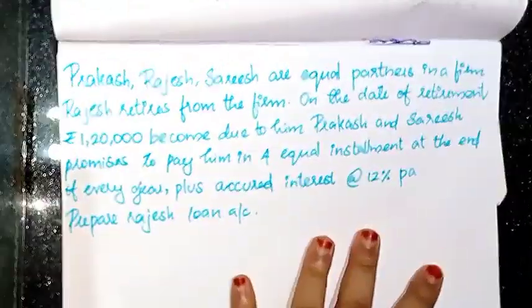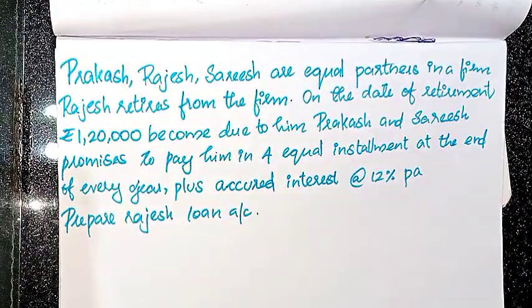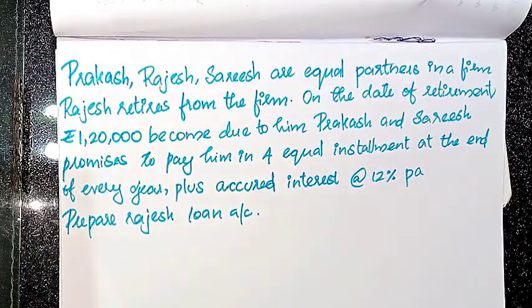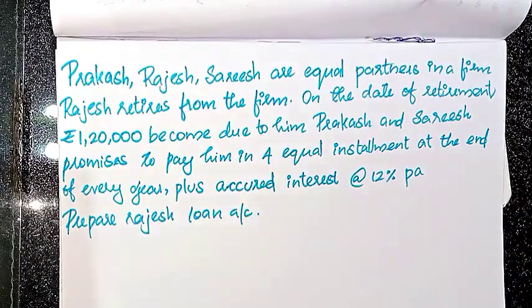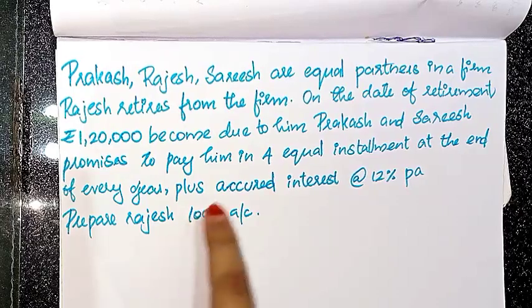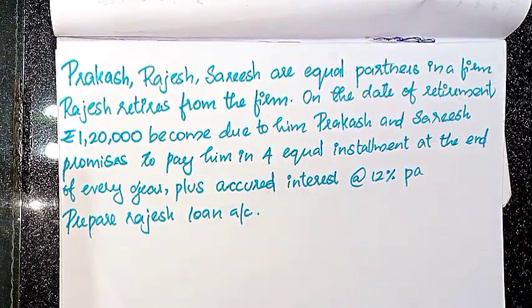Now the first question is: Prakash, Rajesh, and Suresh are equal partners in a firm. Rajesh retires from the firm. On the date of retirement, ₹1,20,000 becomes due to him. Prakash and Suresh promise to pay him in 4 equal installments at the end of every year, plus 12% interest.